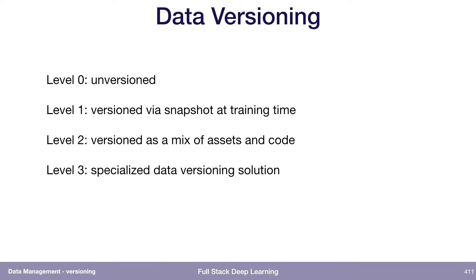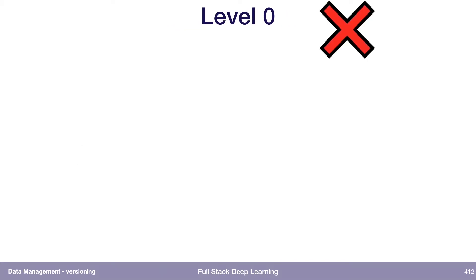The first level is just unversioned data. Level one, you version it by taking a snapshot. Level two, you version basically by also providing your transformation process. And then level three might be a machine learning specific data versioning solution. So just go through them in order.